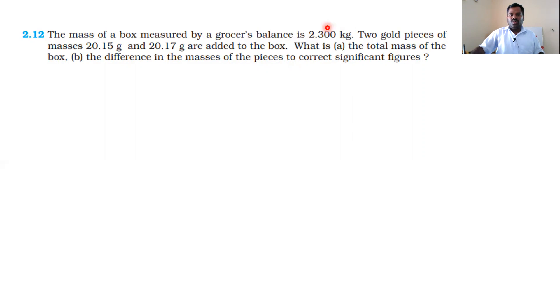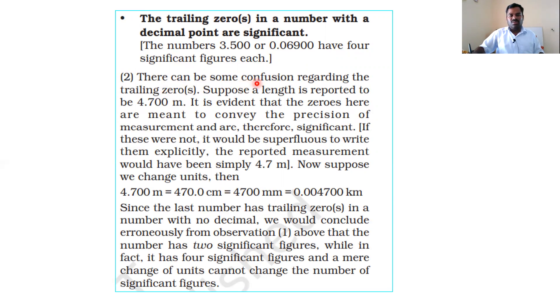In the mass 2.300 kilograms, the decimal point is significant. Actually, four significant figures. There can be some confusion regarding trailing zeros. Suppose the length is reported to be 4.700 meters. It is evident that the zeros here are meant to convey the precision of measurement and are therefore significant. If these were not, it would be superfluous to write them explicitly. The reported measurement would have been simply 4.7 meters.